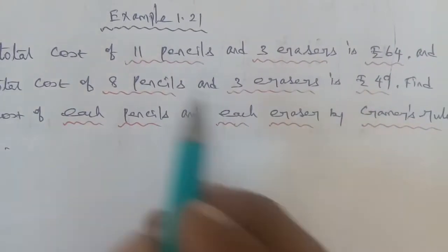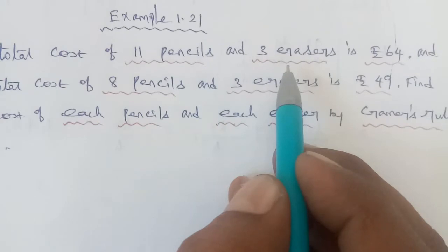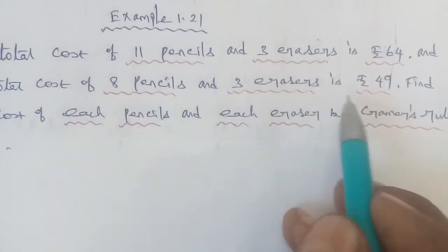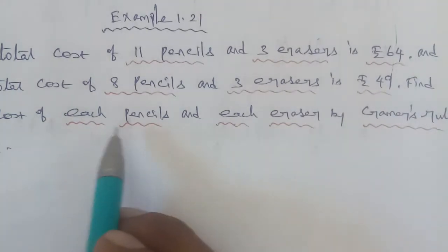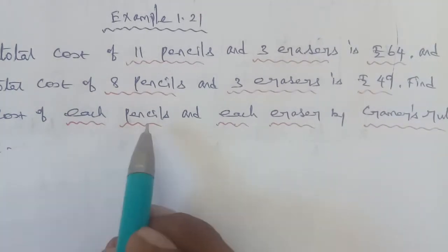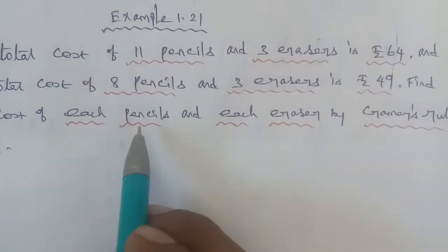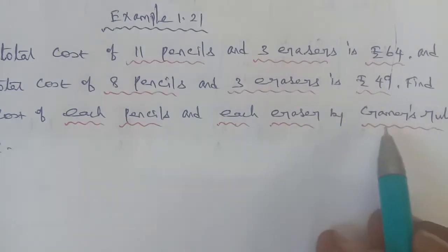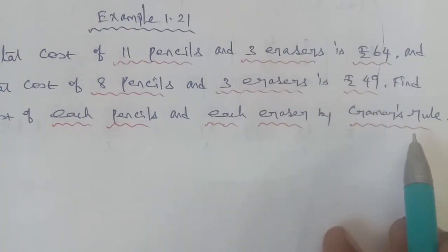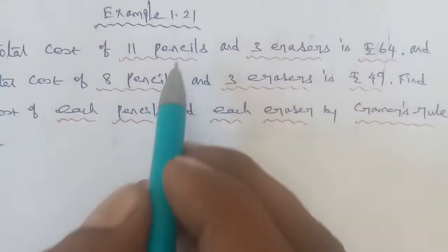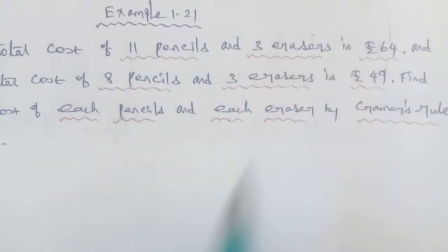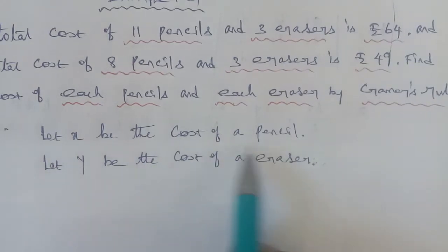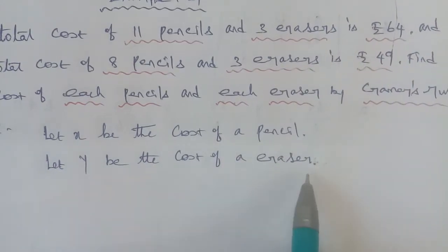So, we have 11 pencils and 3 erasers costing 64, and 8 pencils and 3 erasers costing 49. We need to find the cost of each pencil and each eraser. Let x be the cost of a pencil and y be the cost of an eraser.